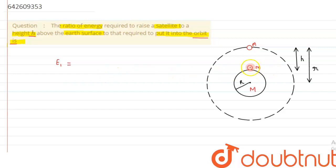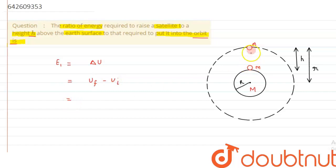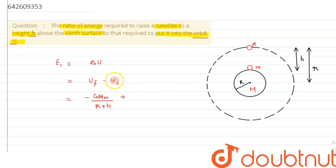The energy required by the satellite to be taken to height h is given by the change in potential energy. So delta U equals U_final minus U_initial. U_final, when the satellite is at height h, is −GMm/(R+h), where the distance from the center is R+h.